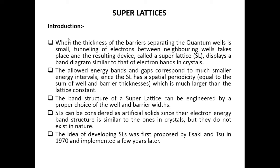Super lattice can be considered as an artificial solid since their electron energy band structure can be controlled externally. The band structure of this kind of system is similar to the ones in crystal, but they do not exist in the actual natural solid. That is why this particular device — the super lattice — is considered to be an artificial solid engineered by engineers and designers. We can control the band structure of super lattice so that it can be created to specification — that is why we say it is an artificial solid.